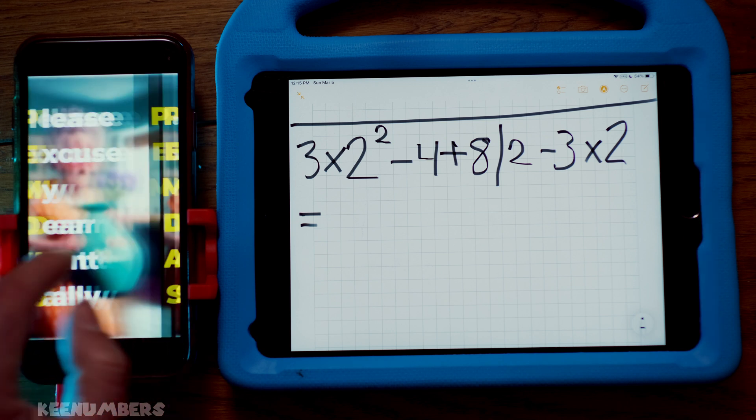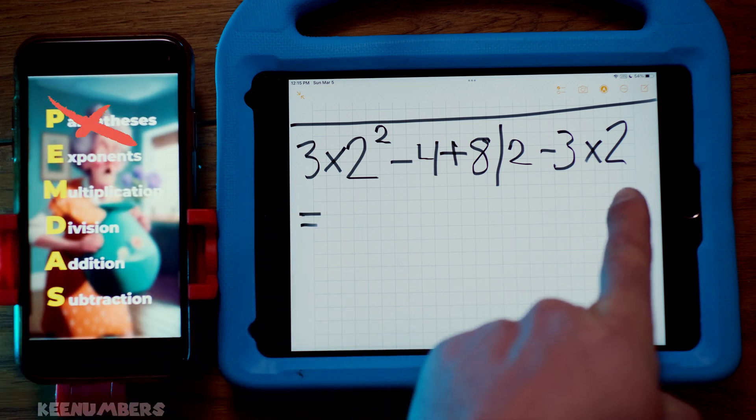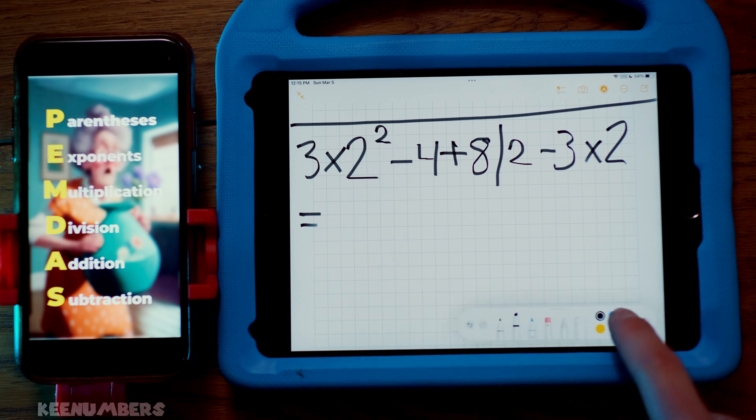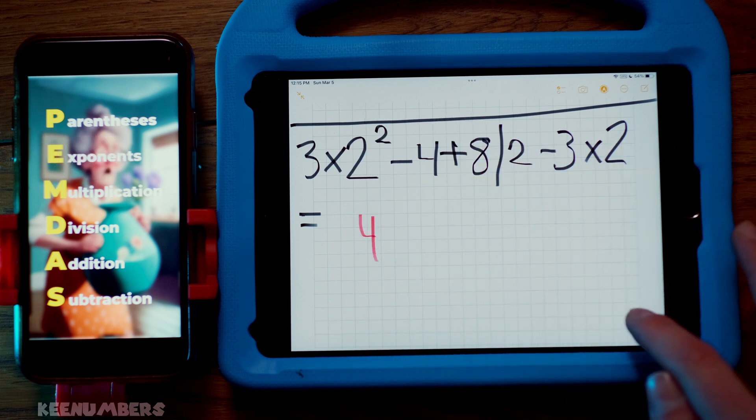Please excuse my dear Aunt Sally. Parentheses first. There are no parentheses. Okay, go to exponents. We have two squared. That's our only exponent. Two by two is simply four.